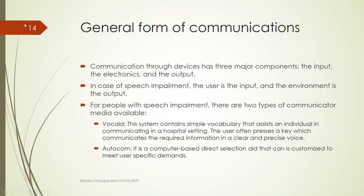The general forms of communication — if you want to develop a communication device, you need a source or input, then the electronics that process the input, and the output. The output could be an environment, a fellow individual, an audience, or an audio recording. In the case of speech impairment, the user is the input and the environment is the output. The person talking is the input, and the device processing the speech is the electronics.